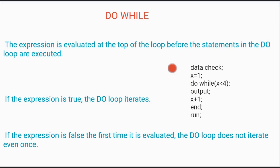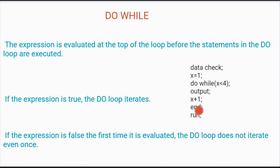Over here you need to remember one more thing: if the expression is false the first time it is evaluated, the DO loop does not iterate even once. What does that mean? If I had written x is greater than four — is one greater than four? No, it is not. So it will not even iterate once. Why is it happening? Because your expression is evaluated at the top — henceforth you will not find any value in the result.